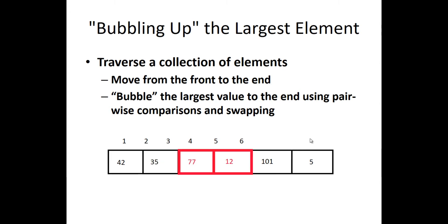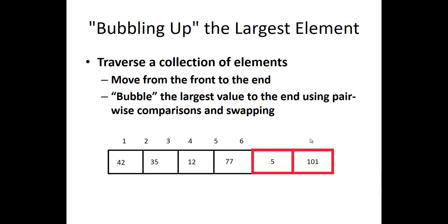After swapping, we increment again. 77 and 12 are compared and swapped. Next, 77 and 101 are compared, but here 101 is the largest value and is already on the right-hand side, so there is no need to swap. The last pair is 101 and 5 — 101 is again the largest value, so we swap it to the right-hand side.